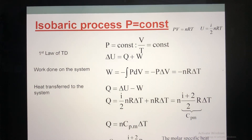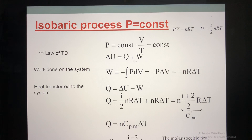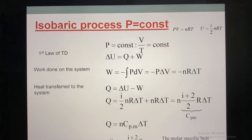Remember, in the first law of thermodynamics, for each process, we try to calculate three things. The first one is the change of internal energy. The second one is the work. And based on the first law, we will calculate the heat. Following that, you try to remember the equation of the process. In this case, we consider the isobaric process, which means pressure is constant.